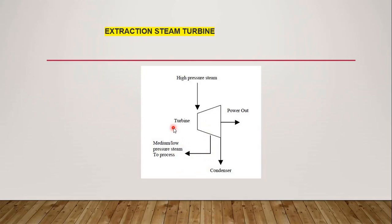The first outlet extracts steam at intermediate pressure for feeding the heating process, while the second outlet extracts the remaining steam at low pressure for condensation. The extraction of heat from the first outlet can be stopped to generate more output — control valves at this outlet make this turbine very flexible and allow adjusting the output as per demand. The steam from the second outlet goes to the condenser chamber where cooling water brings the temperature of the steam down.